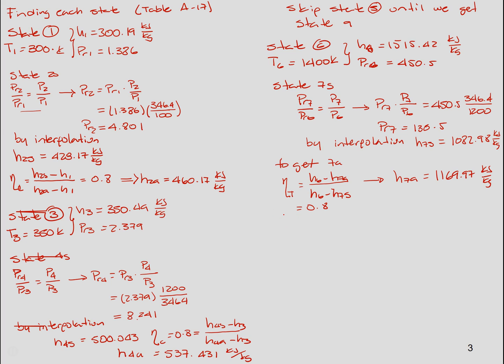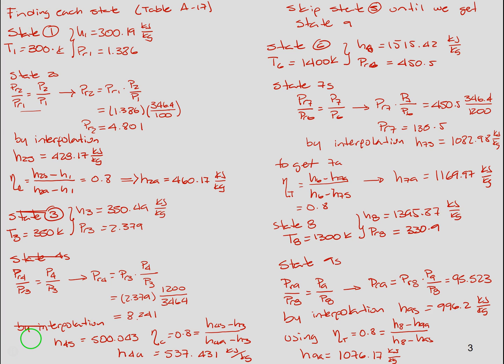So we start by our isentropic relation. We solve to get PR9 to be 95.523, and then by interpolation we find the value of h9s. Using the definition of the isentropic efficiency for the turbine and knowing that the value is 0.8, we can get the value of our h9a. Now we have h9a, so we can come back here to find the value of state 5.